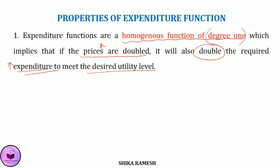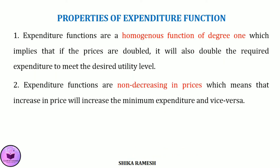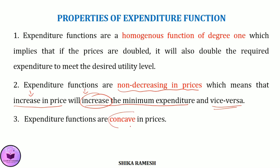The second property is that expenditure functions are non-decreasing in prices. That means as the price of goods increases, the minimum expenditure required to achieve a given level of utility does not decrease. The third property is that expenditure functions are concave in prices.